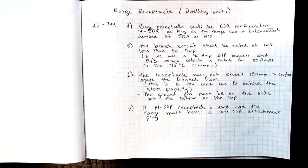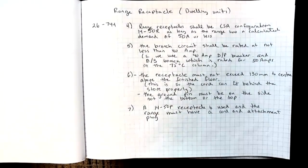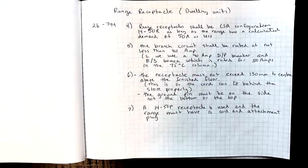Let's look at the CC rules for a range receptacle within a dwelling unit, 26-744. Sub-row 4 says range receptacles shall be CSA configuration 14-50R as long as the range has a calculated demand of 50 amps or less.